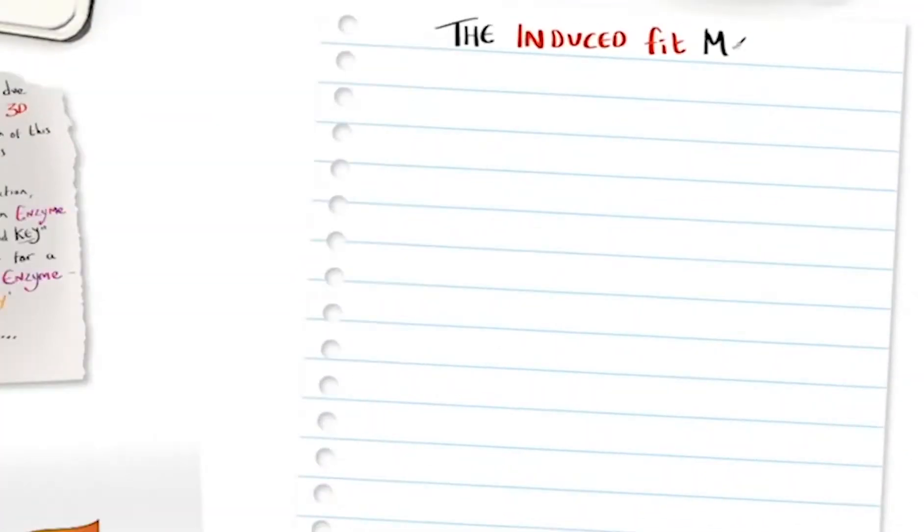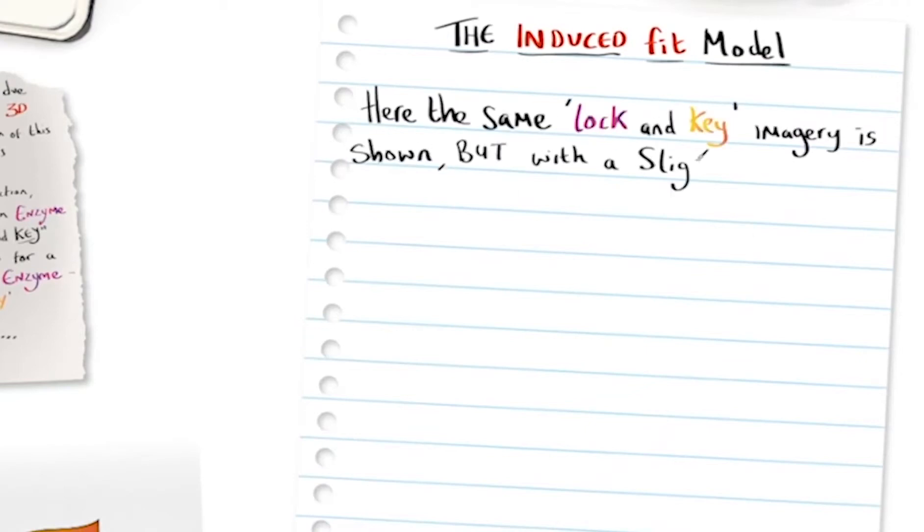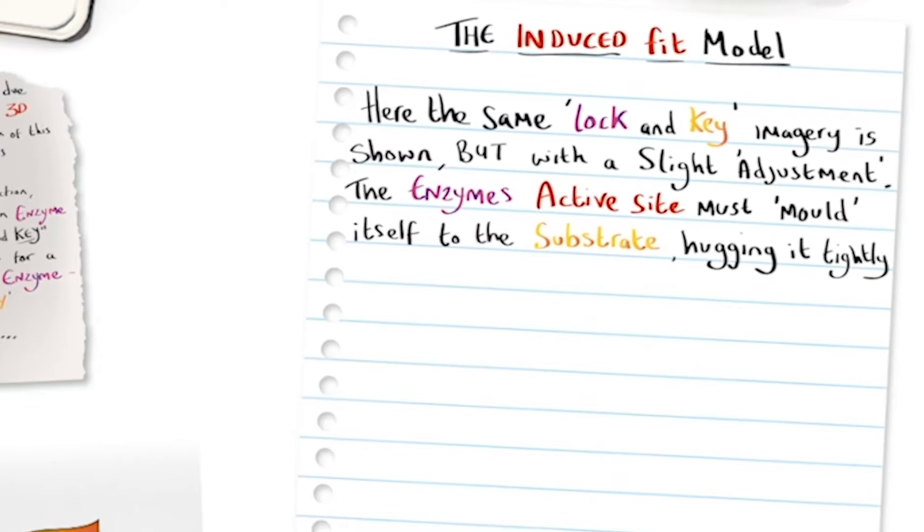So the induced fit model of enzyme action: here the same lock and key imagery was shown but with a slight adjustment. The enzyme's active site must mold itself to the substrate, hugging it tightly in position, a maneuver only the correct substrate can induce.